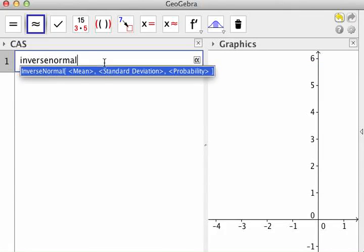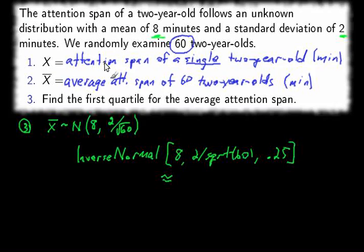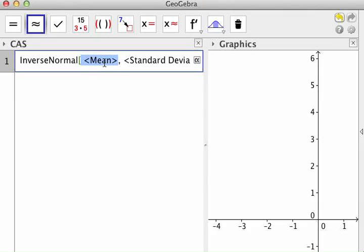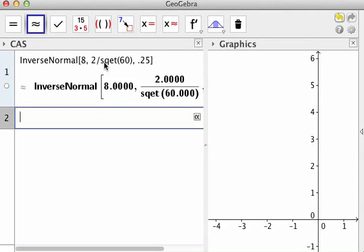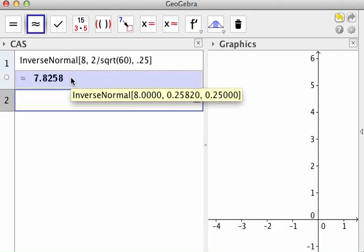Inverse normal with a mean of eight, standard deviation two divided by the square root of 60, and probability 0.25. Oh, whoops. How about the square root? There we go. Square root of 60. Okay, better. 7.8258.